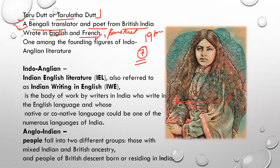She was one among the founding figures of Indo-Anglian Literature. Toru Dutt is considered one of the founding figures of Indo-Anglian Literature. Now the topic to understand is: what is Indo-Anglian? There is a lot of confusion between Indo-Anglian and Anglo-Indian, and today we will clear that confusion because it is asked in exams.